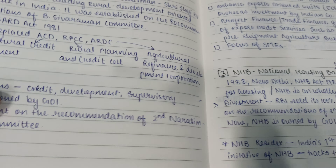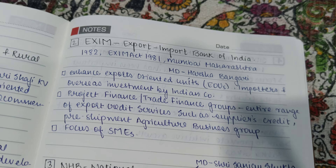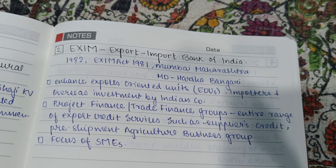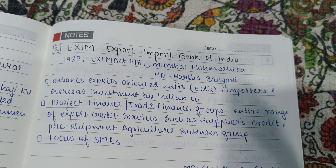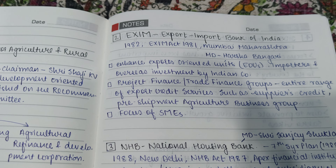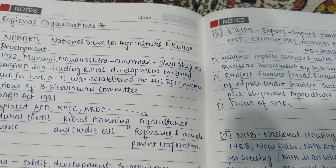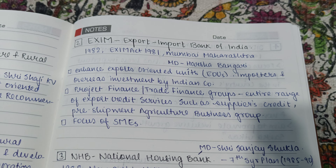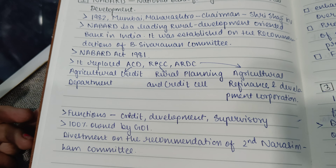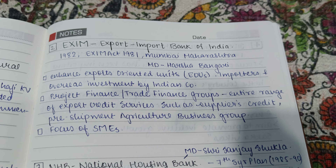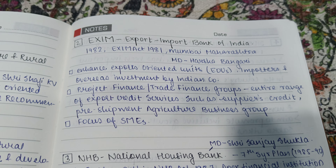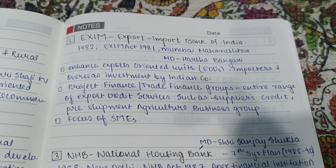Now let's move to EXIM Bank — the Export Import Bank of India. It is mainly related to export and import. It was formed in 1982. Both NABARD and EXIM were formed in 1982 and both have their headquarters in Mumbai, Maharashtra. The EXIM Act is also 1981, same as the NABARD Act. The MD of EXIM is Harsha Bangari.